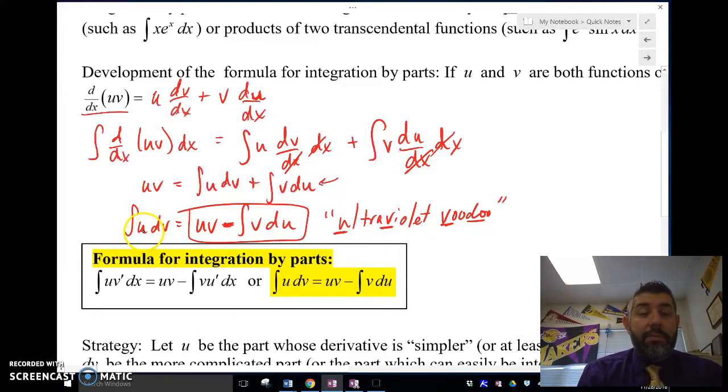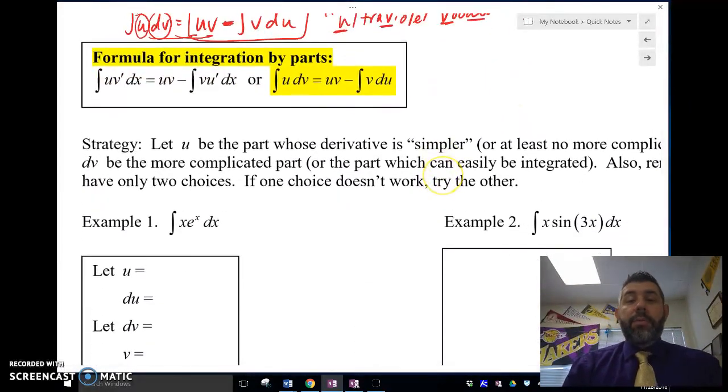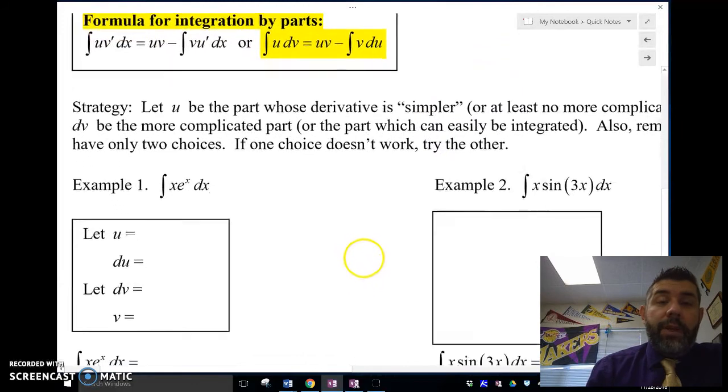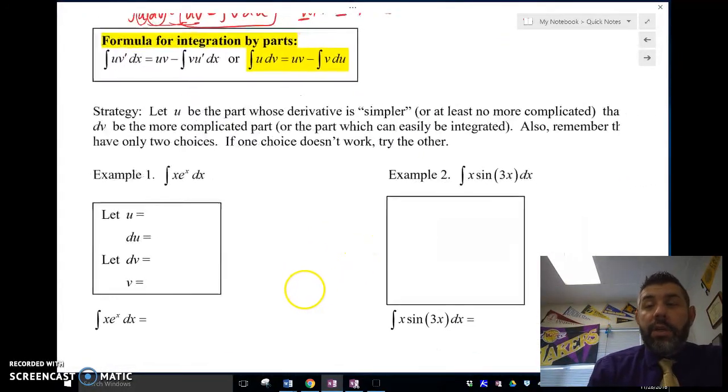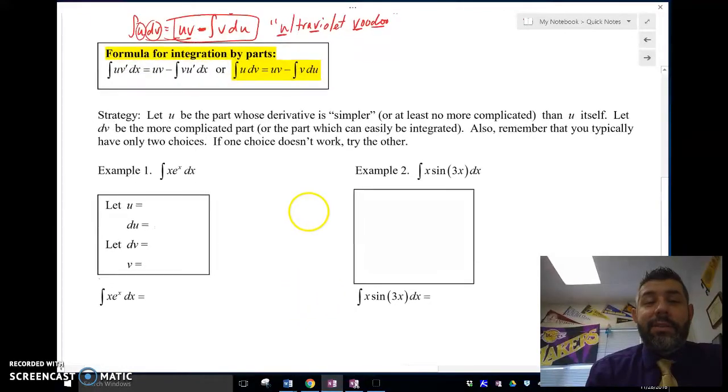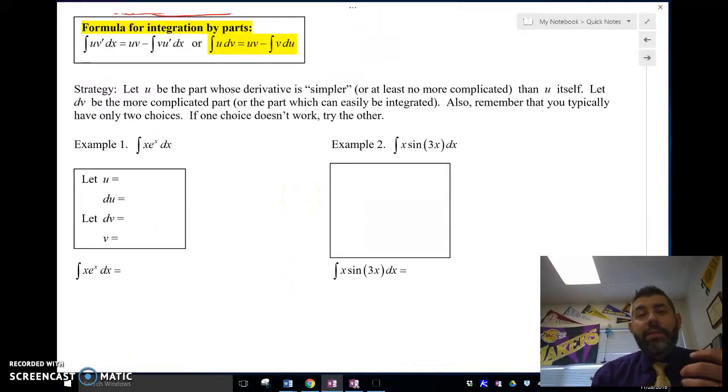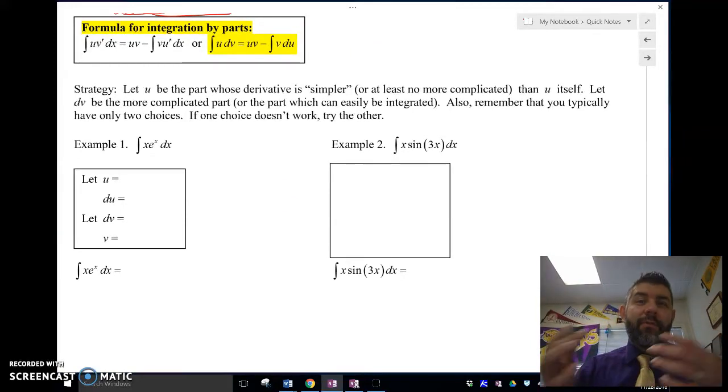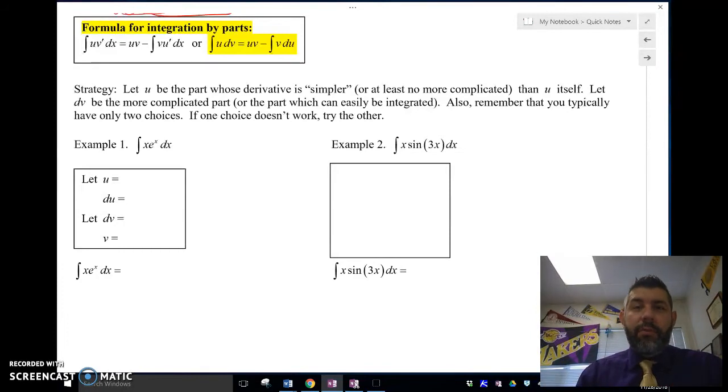So uv minus integral of v du. And we're always looking at taking one part, the u, we're going to take a derivative of, the other part we're going to take an antiderivative of, so we can find the v and we can find the du. So that's the formula for integration by parts. So here's a strategy, folks. You're going to let u be the part that's simpler. The hardest part about this is really just determining what's u and what's dv.